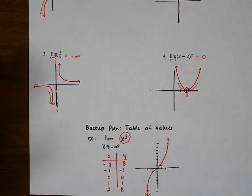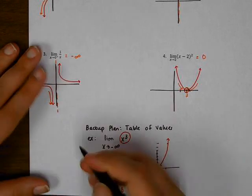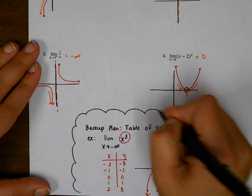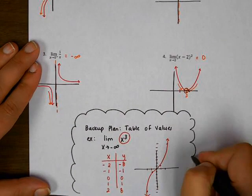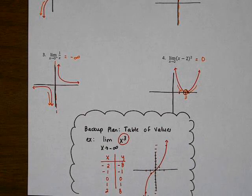Now obviously it's always easier if you actually know the shapes of the graph ahead of time. But if you get stuck, your backup plan should always be to make a table of values for that function so that you don't have to just quit on the problem. You should always have a resource or a plan, a strategy for figuring out those graphs.